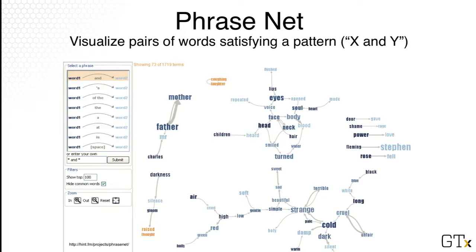Another way to visualize text documents is using something we call a phrase net. So instead of a hierarchy or tree, now we'll build a graph out of our documents. Specifically we'll look at relationships among words. In this example we're interested in the trigram 'x and y' — that means word number one separated by the word 'and' and then word number two. The words in our graph are the words you see in your documents, and an edge will exist in this graph. For example, the trigram 'father and mother' would produce a really thick edge connecting 'father' and 'mother', meaning there are many such trigrams found in our documents.